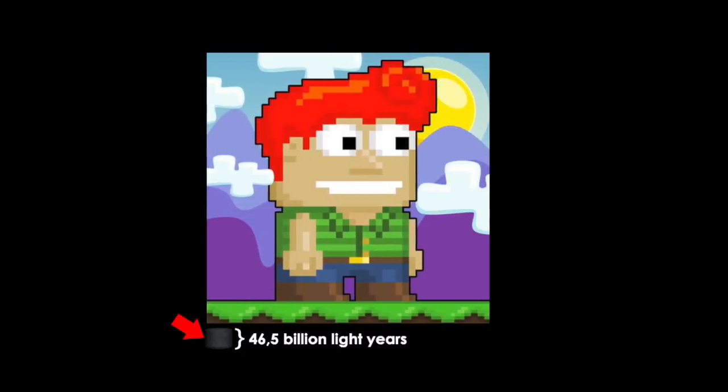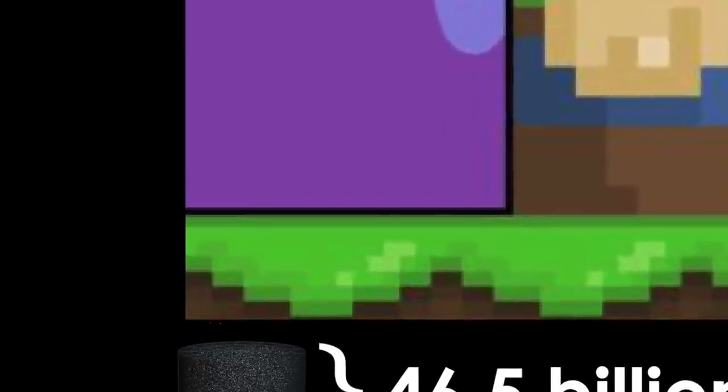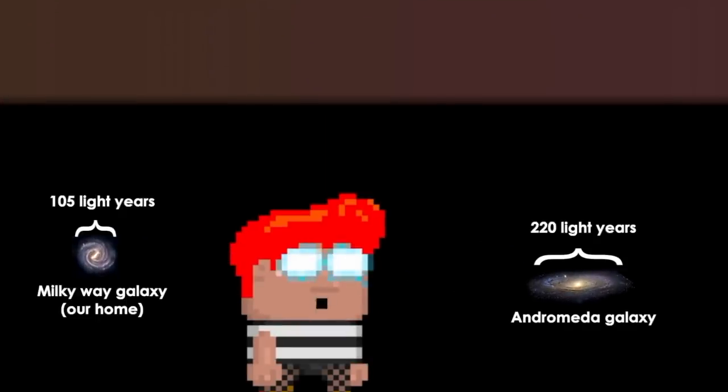And this is the observable universe compared to all of Growtopia. It's around 46.5 billion light years in diameter. And here are little galaxies, the Milky Way and Andromeda.